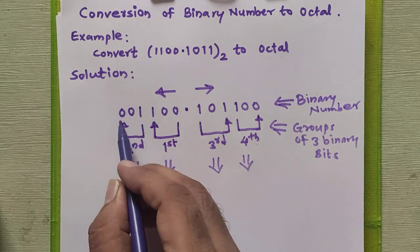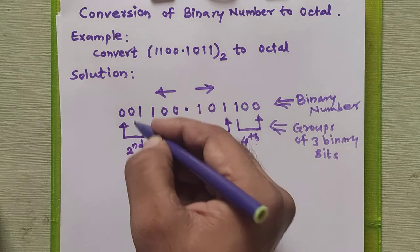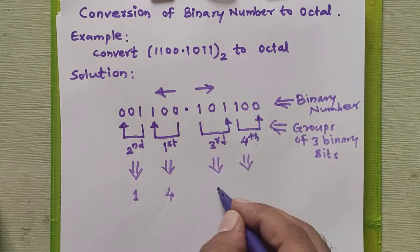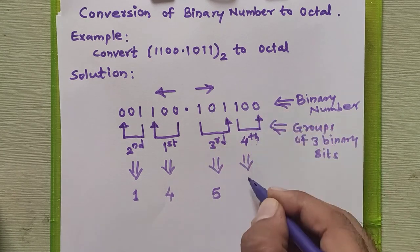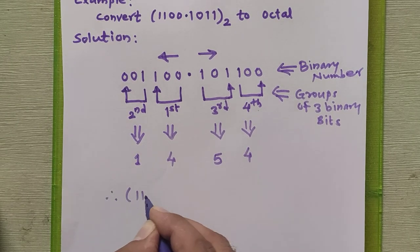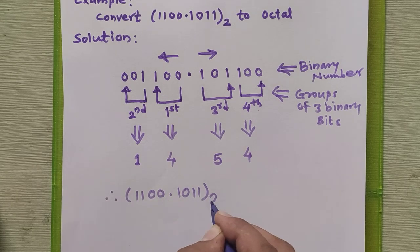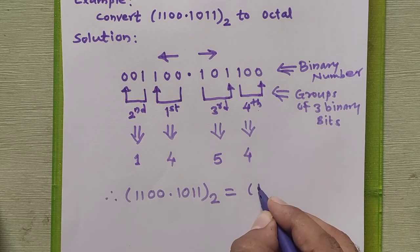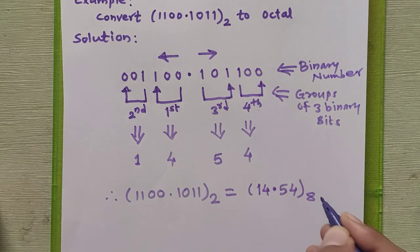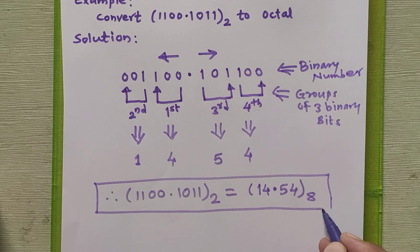The octal equivalent for 001 is 1, for 100 is 4, for 101 is 5, and for 100 is 4. Therefore, 1100.1010 binary is equivalent to 14.54 in octal. This is how we can convert any binary number to octal number. Thank you.